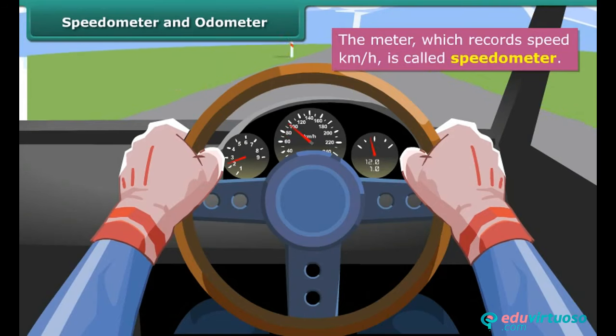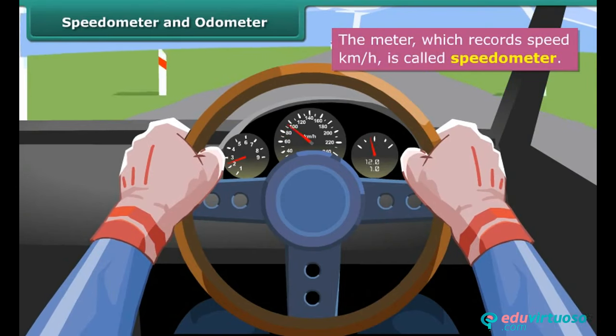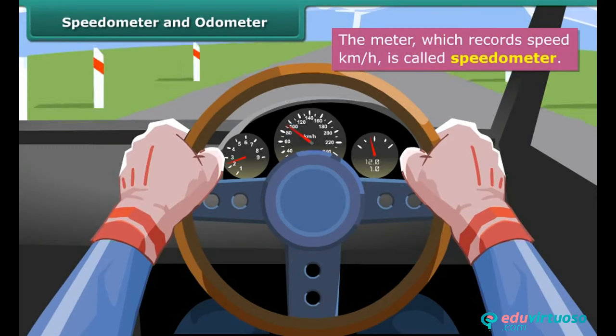When the car is in motion, one needle points to a particular number in the speedometer. This number is the speed of the car in km per hour.